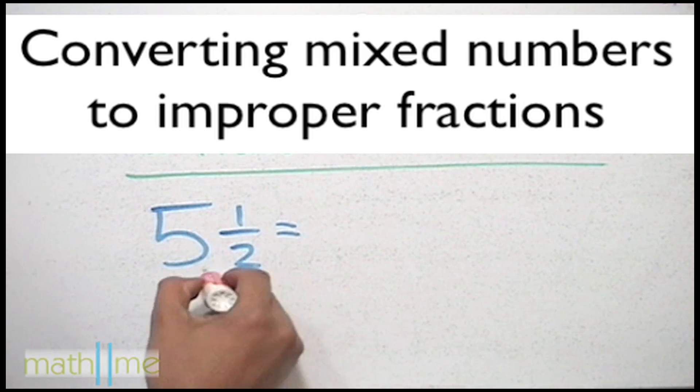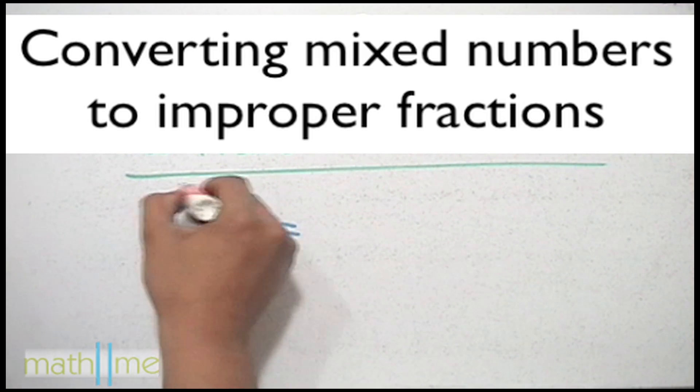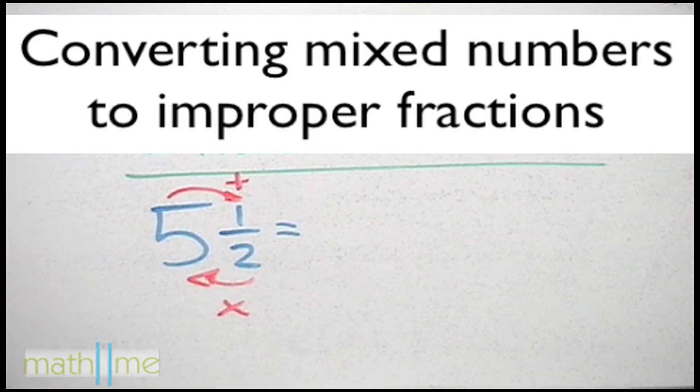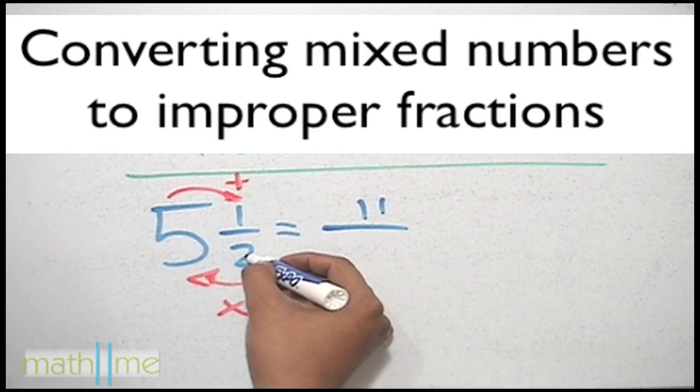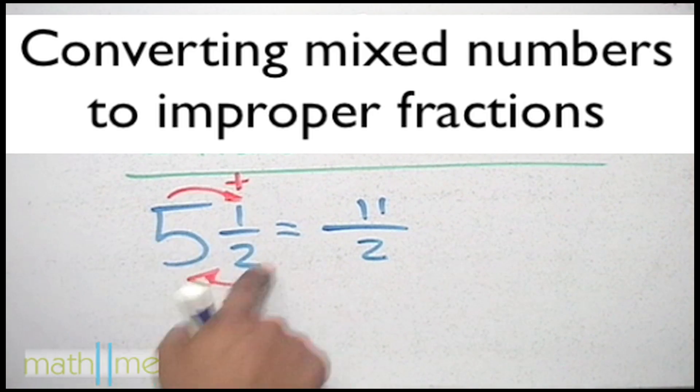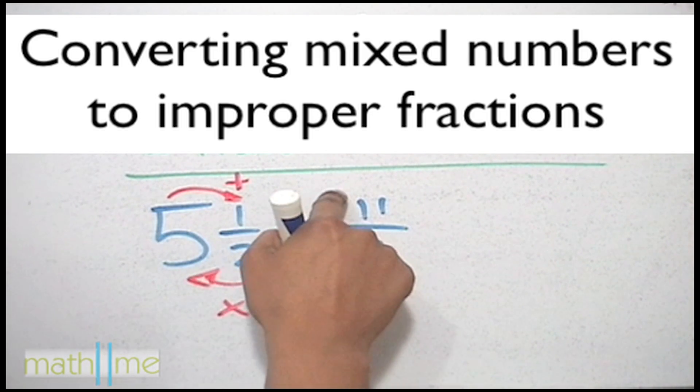Multiplying the denominator and the whole number, add the result to the numerator. Multiplying 2 times 5 equals 10 plus 1 is 11. Put the 11 in the numerator. 2 remains as the denominator. So 5 and a half equals 11 over 2.